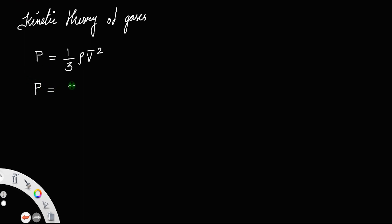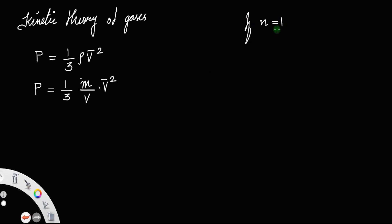We can write p = (1/3) × (mass/volume) × v². If n = 1, meaning the number of moles is equal to 1, the expression for number of moles gives us: mass divided by molecular mass equals 1.